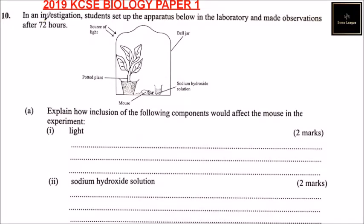Question number 10. In an investigation, students set up the apparatus below in the laboratory and made observations after 72 hours. So we have a plant, a potted plant, we have a mouse, we have sodium hydroxide solution, we have a bell jar which is transparent, and we have a source of light.